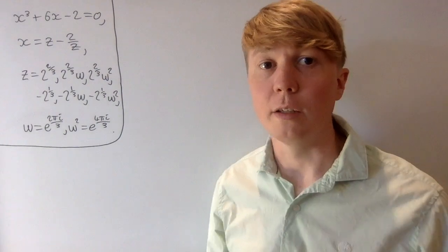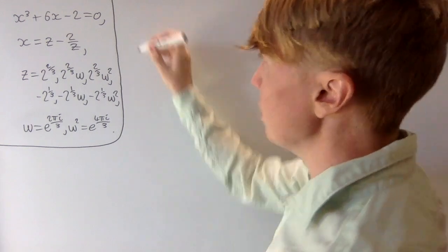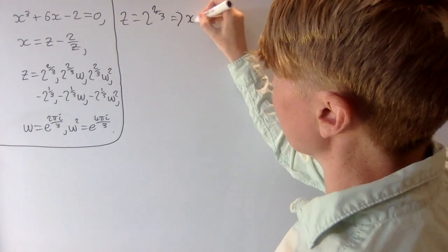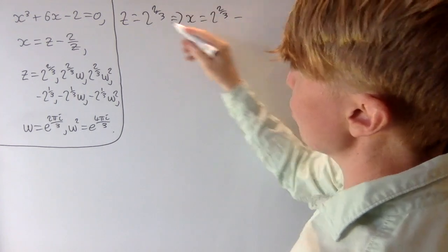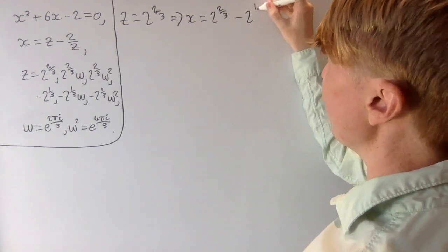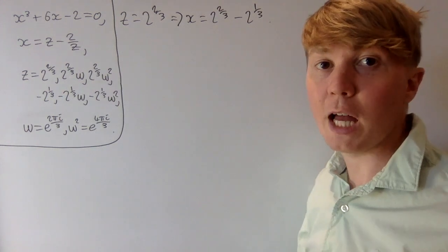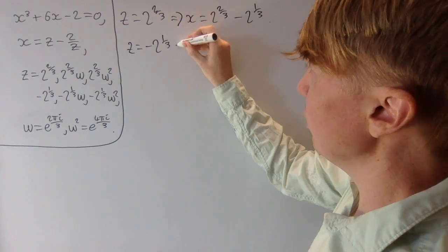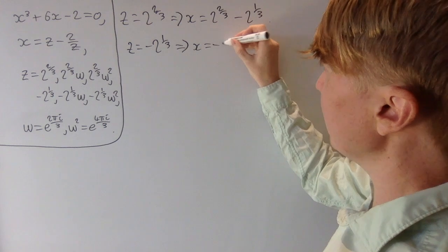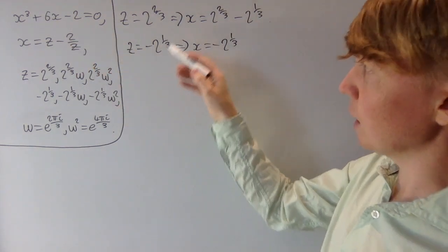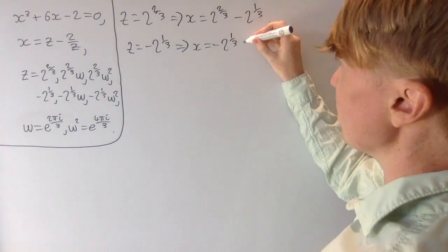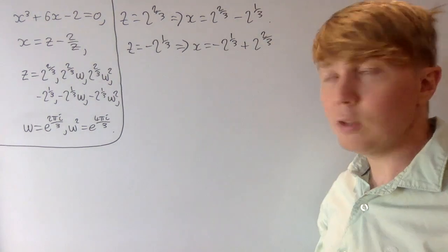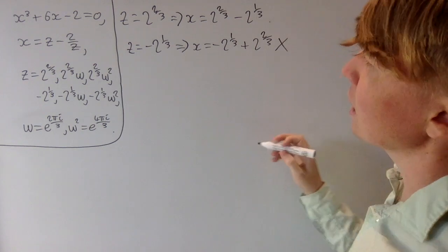Now we substitute in these z values to find our x values. When z equals 2 to the 2/3, substituting into z minus 2 over z gives x equals 2 to the 2/3 minus 2 to the 1/3. When z equals minus 2 to the 1/3, x equals minus 2 to the 1/3 plus 2 to the 2/3, which is actually the same solution as before. So even though we have six potential z solutions, we're already seeing repeats.